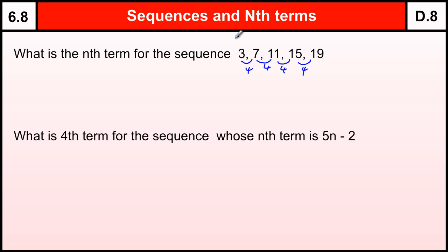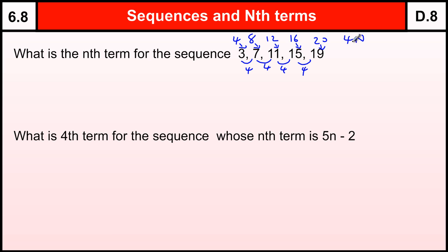So if I write out the 4 times table: 4, 8, 12, 16, 20 — you can see that there is a connection between these. And that connection is that I need to subtract 1 from the 4 times table. Now the 4 times table is the sequence for N, because the first term is 4 times 1, the second term is 4 times 2, the third is 4 times 3, the fourth is 4 times 4. So it is 4 times whatever the term is.